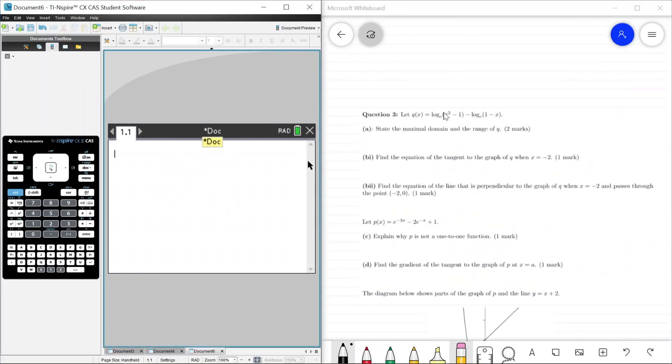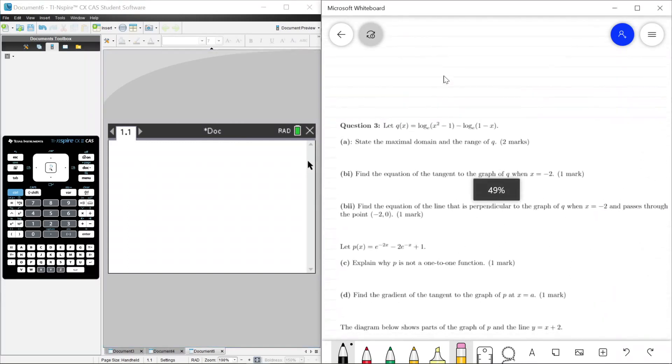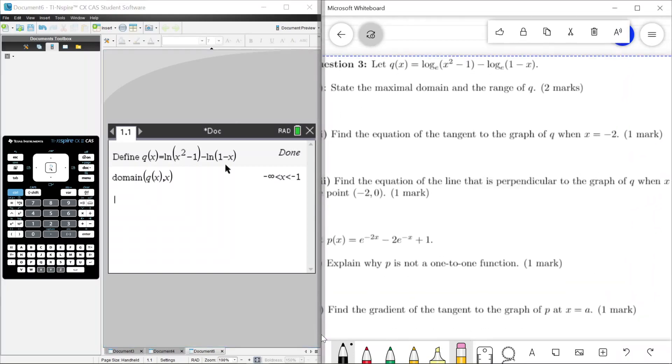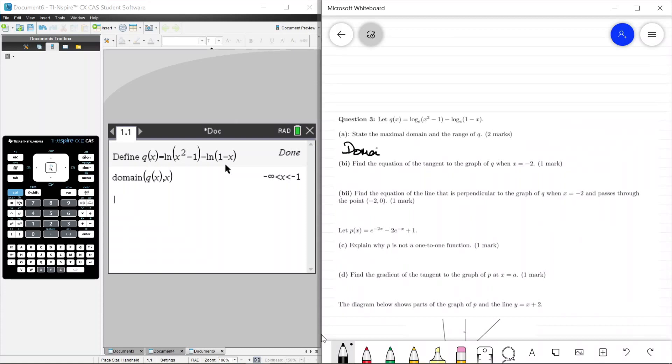We will be using the CAS programs because this is a very nice question for CAS programs. So question 3, let Q of X be equal to this logarithmic mess. If we have a function, always define it on your CAS, so define Q of X to be equal to ln of X squared minus 1 minus the natural log of 1 minus X. We define Q of X. Question A, state the domain, so we can get that by doing domain Q of X, comma X on the CAS, and that's minus infinity to negative 1.